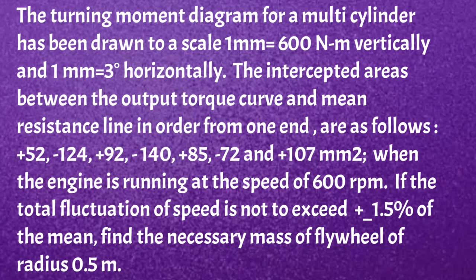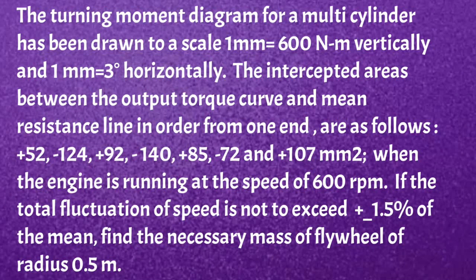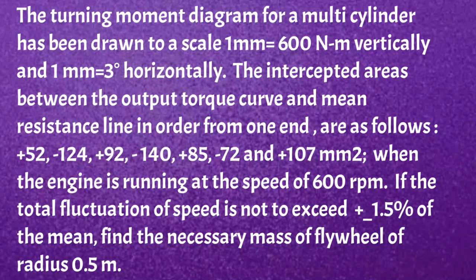And +107 millimeter square. The engine is running at a speed of 600 rpm. If the total fluctuation of speed is not to exceed ±1.5 percent of the mean speed, find the necessary mass of the flywheel of radius 0.5 meter. That was the given question.